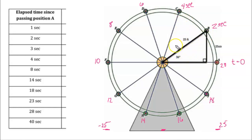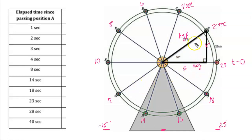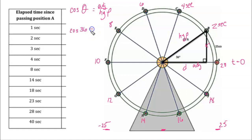We always want to use a reference triangle. The radius is 25 feet and the angle of rotation is 36 degrees. This time we're not looking for height — we want this horizontal distance D from the center. In the reference triangle, this horizontal distance is the adjacent side, and the radius is the hypotenuse. Thinking back to our trig functions, adjacent over hypotenuse is cosine. So cosine of 36 degrees equals adjacent over hypotenuse, meaning the adjacent equals 25 times cosine of 36 degrees.